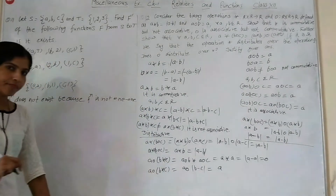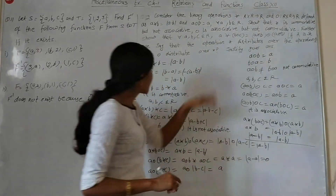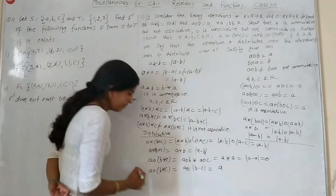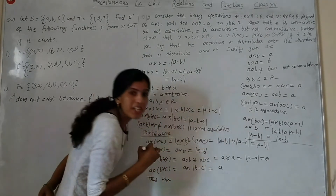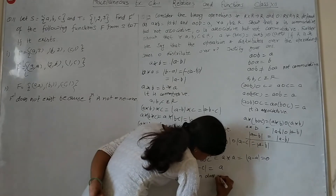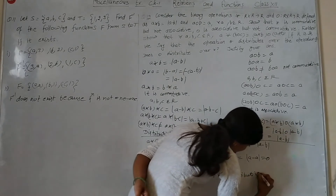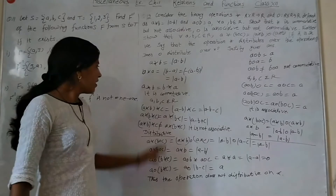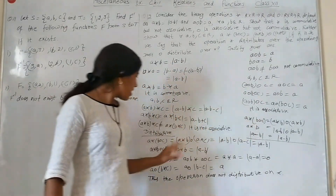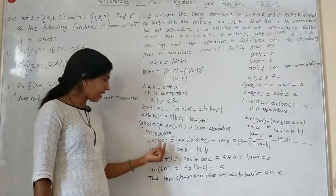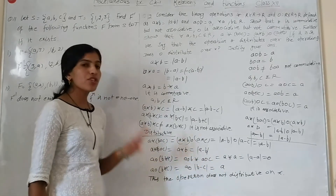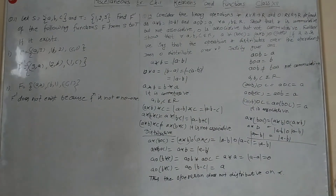Since both sides are not equal, O does not distribute over star. So star distributes over O, but O does not distribute over star. In summary: star is not commutative, star is not associative, O is not commutative, O is associative. Star distributes over O, but O does not distribute over star.